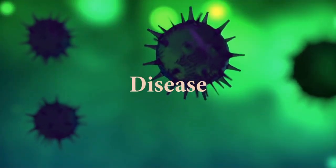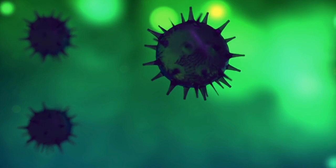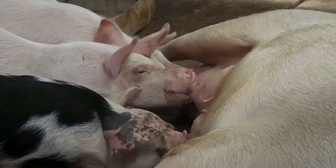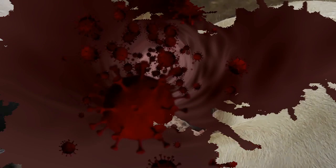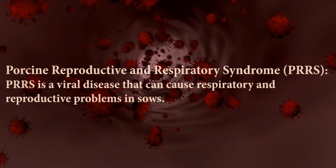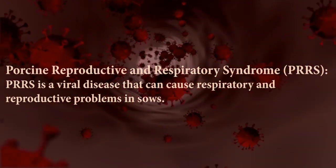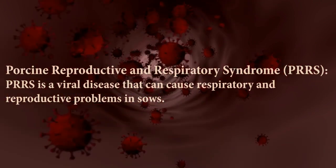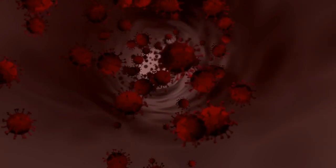Disease is a significant factor that can cause infertility in sows. Several diseases can negatively impact reproductive health, leading to reduced fertility rates, abortions, stillbirths, and other reproductive problems. Porcine reproductive and respiratory syndrome, or PRRS, is a viral disease that can cause respiratory and reproductive problems in sows. In pregnant sows, PRRS can cause abortion, stillbirths, and reduced litter sizes.